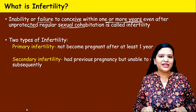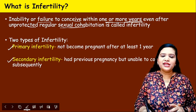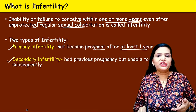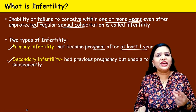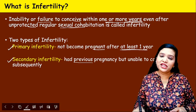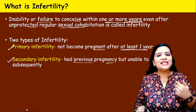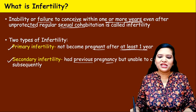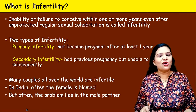Infertility is broadly classified into two types: primary infertility and secondary infertility. Primary infertility is not becoming pregnant after at least one year of marriage — not getting even one baby at all. Secondary infertility means the couple had a previous pregnancy and a baby already, but they are unable to conceive a second child. So they had a previous pregnancy but are unable to conceive subsequently.